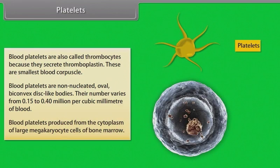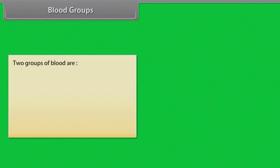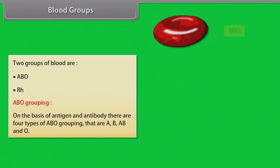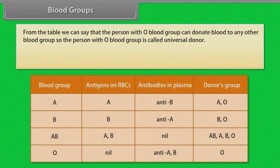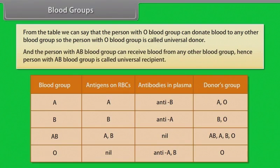Blood platelets are produced from the cytoplasm of large megakaryocyte cells of bone marrow. There are two groups of blood: ABO and RH. On the basis of antigen and antibody, there are four types of ABO grouping: A, B, AB and O. The person with O blood group can donate blood to any other blood group, so they are called the universal donor. The person with AB blood group can receive blood from any other blood group, so they are called the universal recipient.